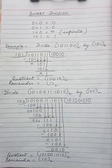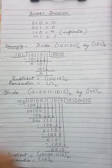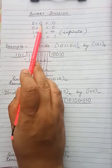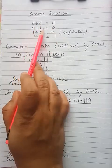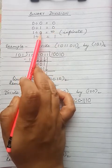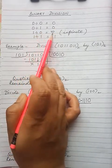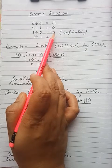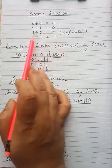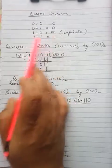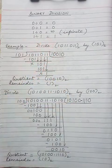Next is binary division. The rules for binary division are: 0 divided by 0 gives 0, 0 divided by 1 gives 0, and 1 cannot be divided by 0 — if written, it means infinite. It is similar to decimal division. We will never write 1 divided by 0. So 1 divided by 1 is 1.